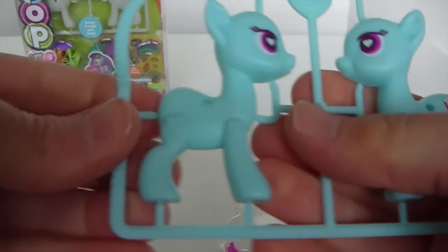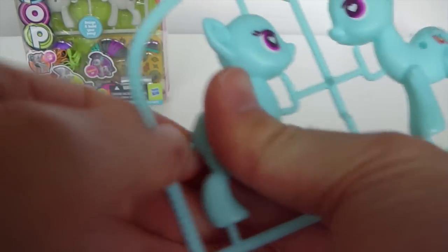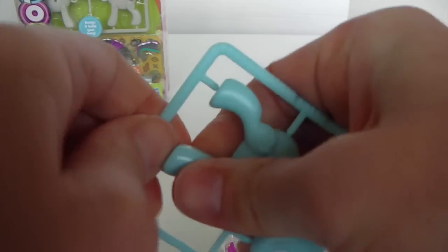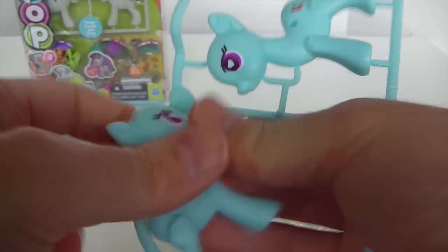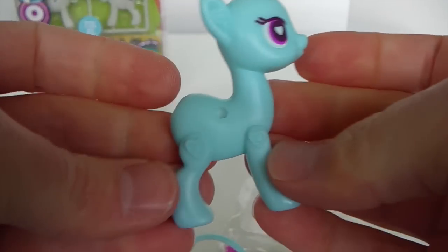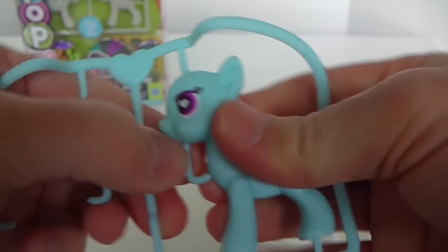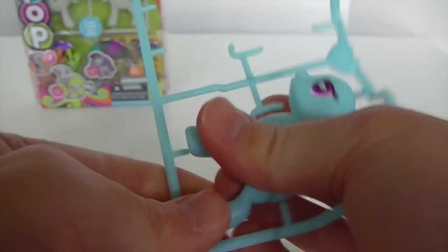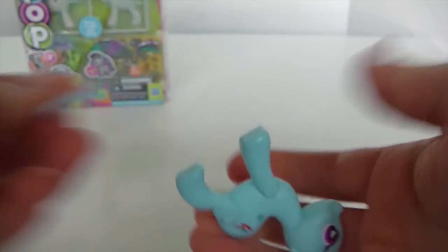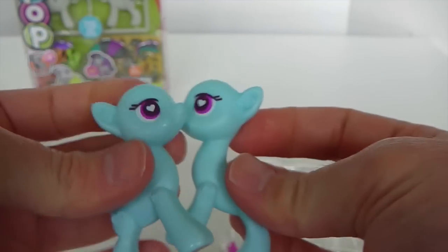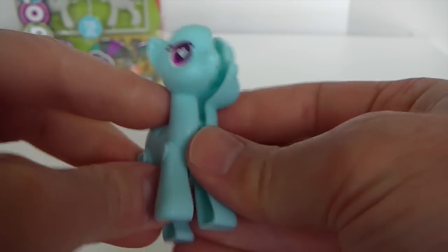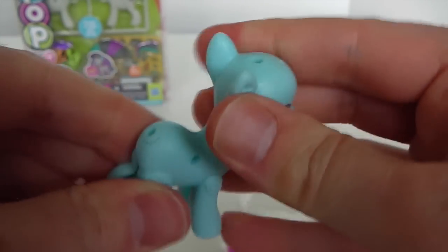OK so this is Rainbow Dash here and all you do is you just snap her out of the plastic pieces. This kind of reminds me of those cars that you can build from those kit sets. So that's one piece. And get the other piece out. And you can just snap her together.